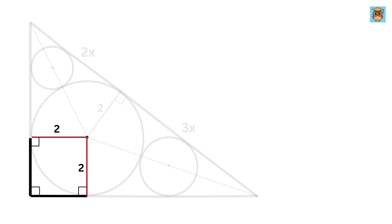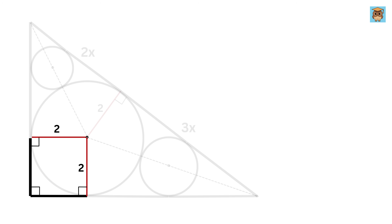Consider this quadrilateral. Both sides are of length two units, and three angles are right angles. Therefore this quadrilateral is a square, and thus the remaining two sides will also be equal to two units.